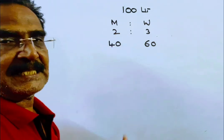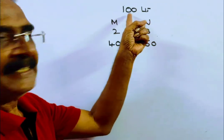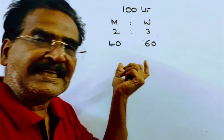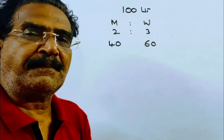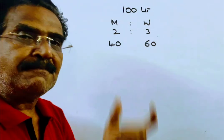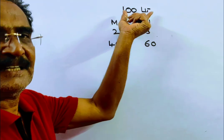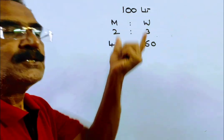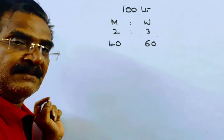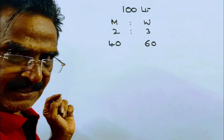10 liters is 10% of 100 liters. So 10 liters drawn means 10% of the mixture is drawn. When 10% of the mixture is drawn, 10% of the milk comes out and 10% of the water comes out.